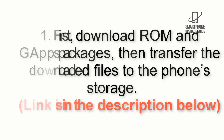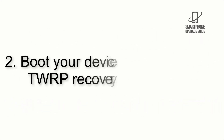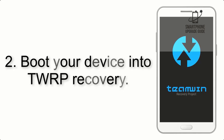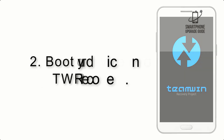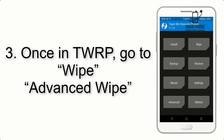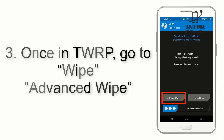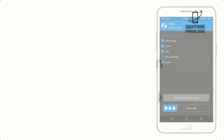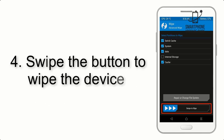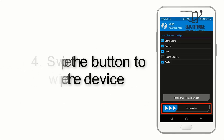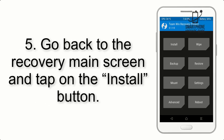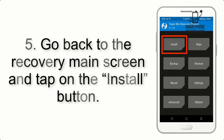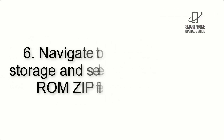Step 2: Boot your device into TWRP recovery. Once in TWRP, click on Wipe, then Advanced Wipe, and select the checkboxes as shown in the image, excluding internal storage. Step 4: Swipe the button to wipe the device.